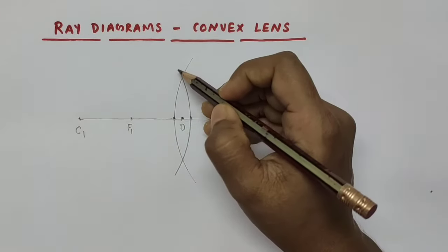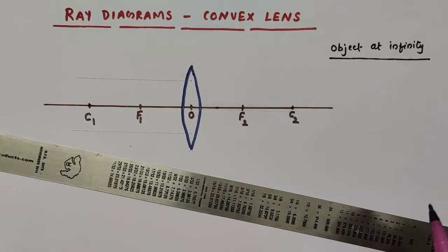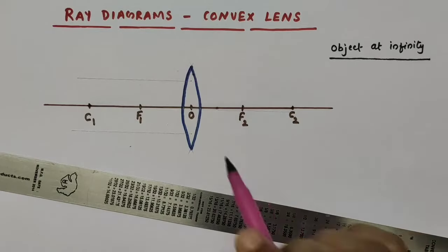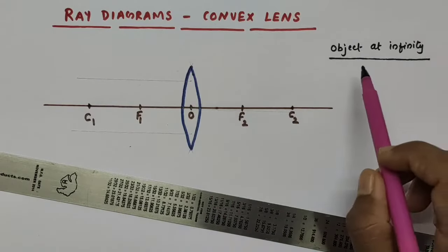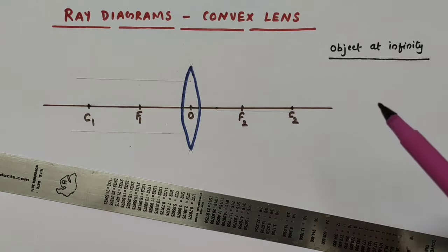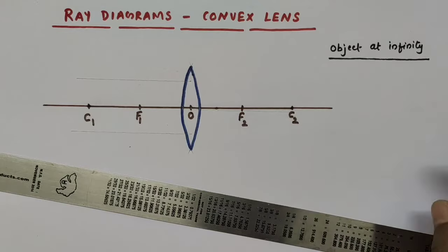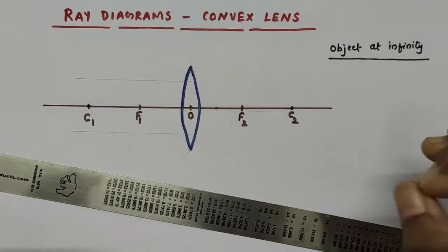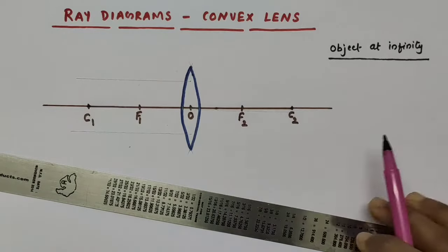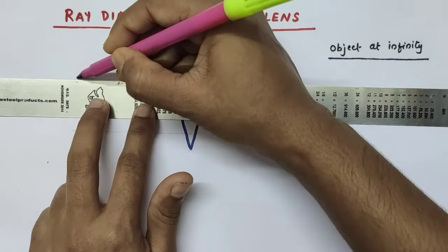Now you can just rub these unwanted lines. Now let us draw the ray diagram for image formation in a convex lens when the object is kept at infinity. When the object is kept at infinity, we can consider the rays coming from infinity as parallel to the principal axis. So here first I am considering a parallel ray of light.